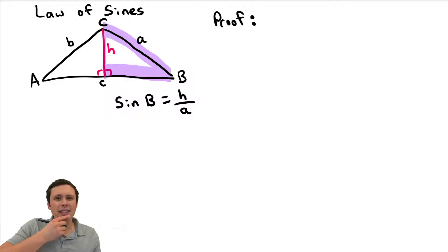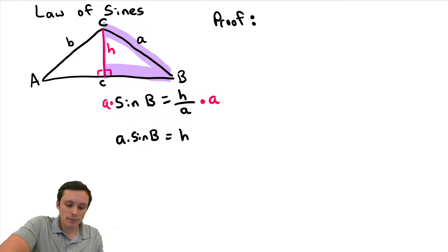Now, let's solve this for the height. How would we solve that for the height? Well, you would multiply both sides by A. So we're going to multiply both sides by A, and that's going to leave us with H is equal to A times sine of angle B. All right, we have the height by itself. Now, what is that good for?